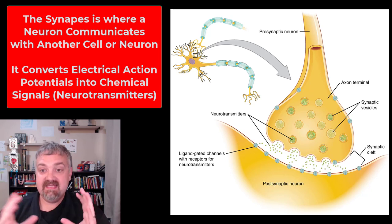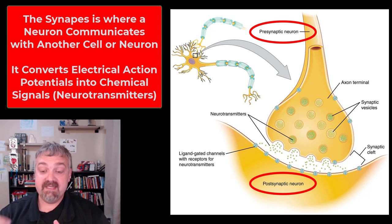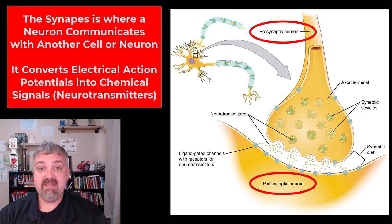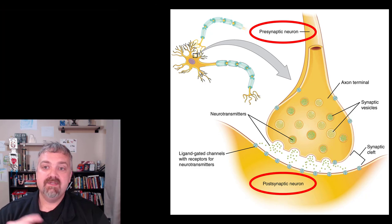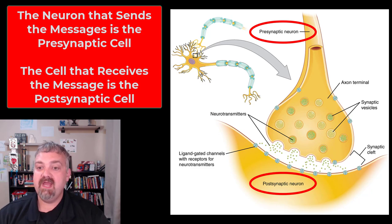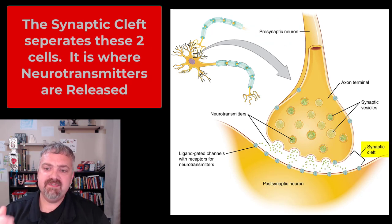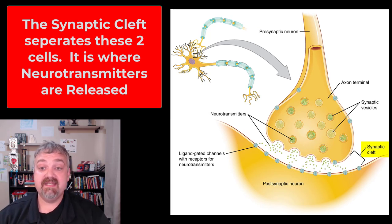The synapse is the place where one neuron can communicate with another cell. In this picture, both the presynaptic and postsynaptic cells are neurons, but a presynaptic neuron can also stimulate skeletal muscle, cardiac muscle, smooth muscle, glands, and fat. The cell with the synaptic knob is the presynaptic neuron — the one releasing the neurotransmitter. Whatever cell is receiving the signal is called the postsynaptic cell. Between these two cells is a space called the synaptic cleft; they are not actually touching each other.